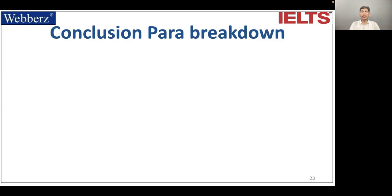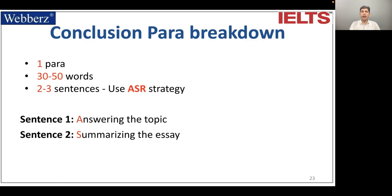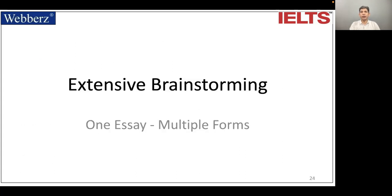Conclusion — paragraph breakdown: one paragraph, 30 to 50 words, two to three sentences using the ASR strategy. A is answering the topic. S is summarizing the essay. And R is recommendation, which is optional.